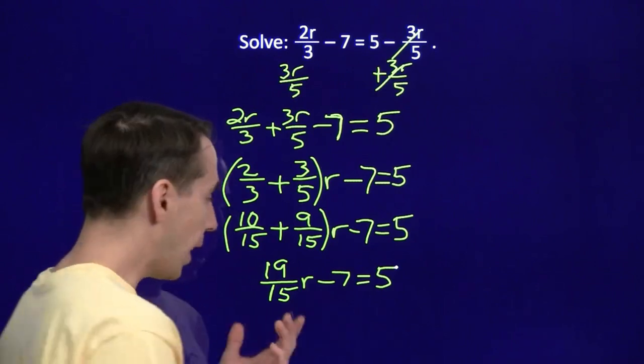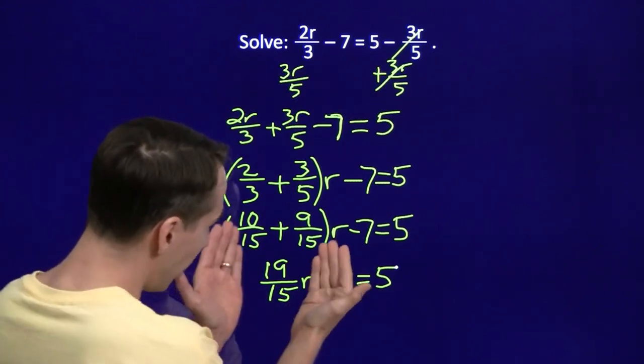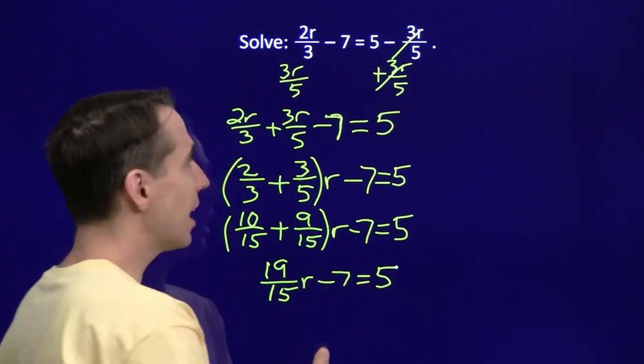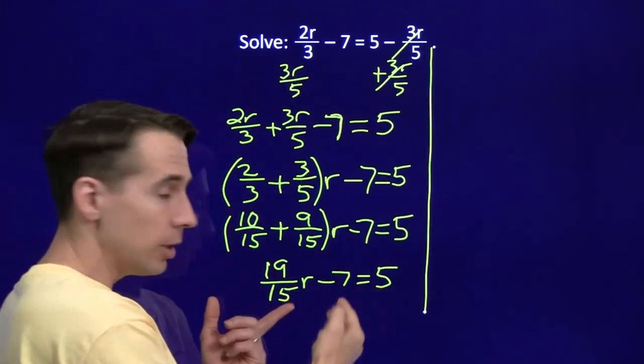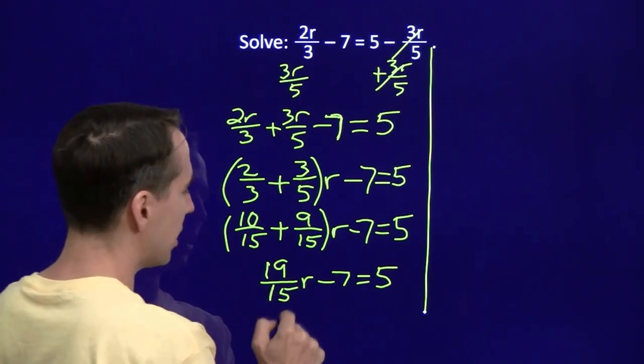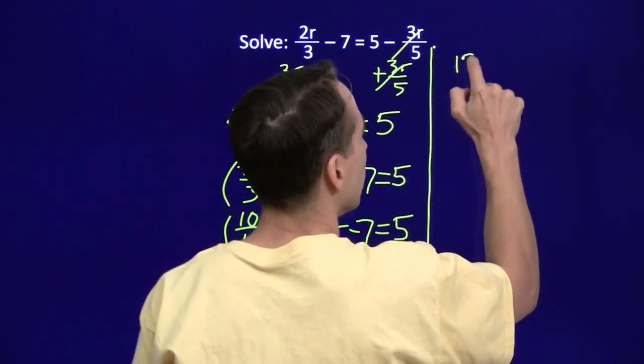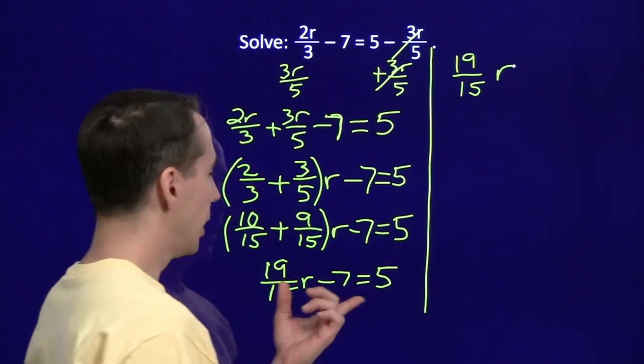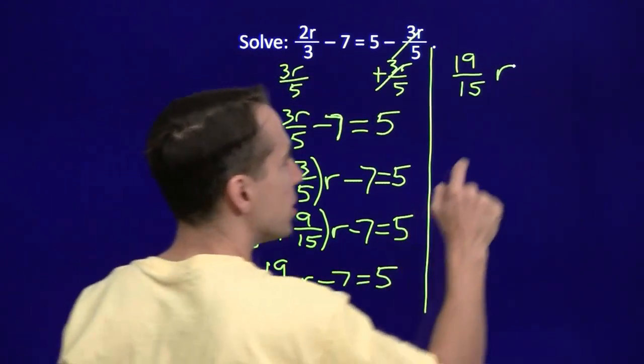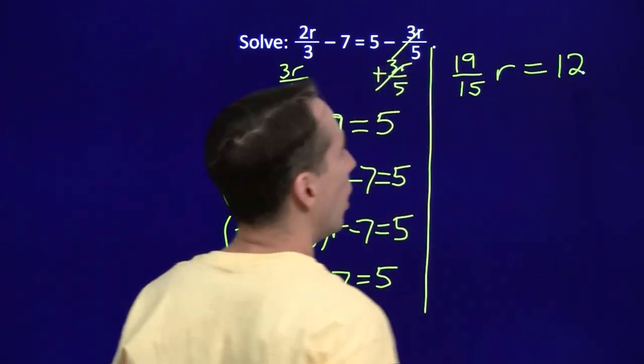And that's an equation we know how to handle. We have to isolate the r, so we're going to isolate this first. We add 7 to both sides. I'm going to put a line here. Continue my work over there. When I add 7 to both sides, that'll cancel the 7 from the left and just leave 19 over 15 times r. And then on the right, 5 plus 7, of course, is 12.